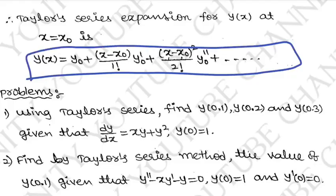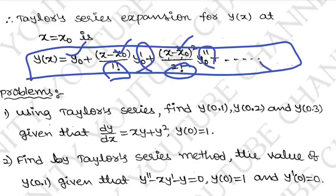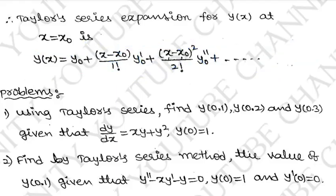We substitute the x0 value and find y'. We find y0, y0', y0'', y0''' up to the 4th derivative. That is why we substitute the derivatives into the Taylor series expansion. That is why we have the solution.